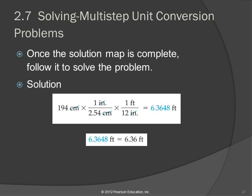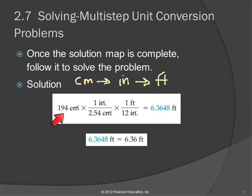So let's write on this a little bit. The map here was centimeters to inches to feet, and that's how you would write that out on your paper. I encourage you when you're beginning to actually write that out. How is this equation that is written here following that map? Those are the units that go on the tops, in the numerators: centimeters, inches, feet. See that?